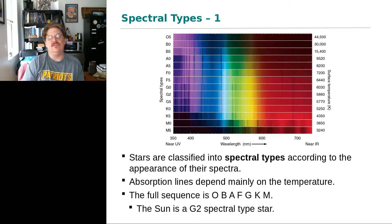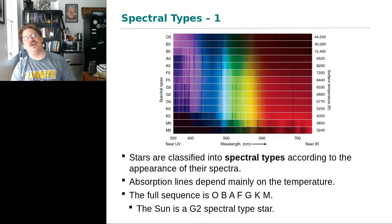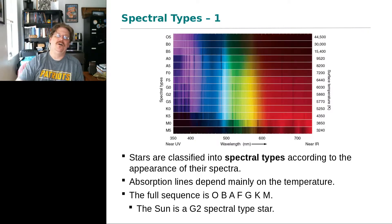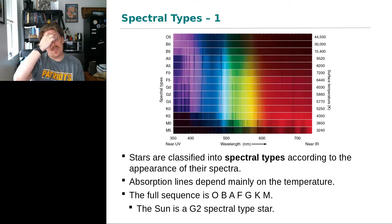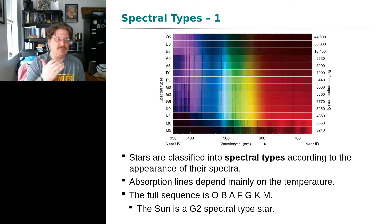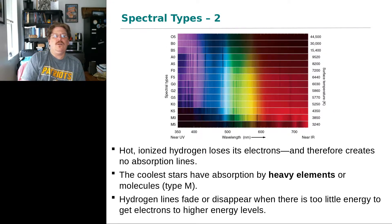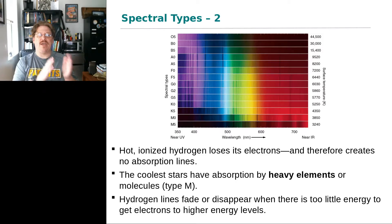Looking at the different spectra, you have spectral type on the left and corresponding surface temperatures on the right. The sun is a G2 star. Spectral types can get far more complicated — they also incorporate luminosity, known as MK spectral types, which I'll describe shortly.